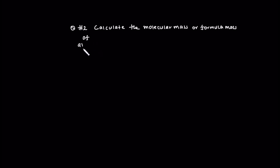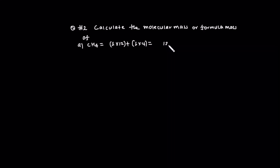Question number two: Calculate molecular mass or formula mass. CH4 is an organic compound, so this is a molecular mass or formula mass calculation. For CH4, carbon is 1 times its atomic mass, plus hydrogen 1 times 4.